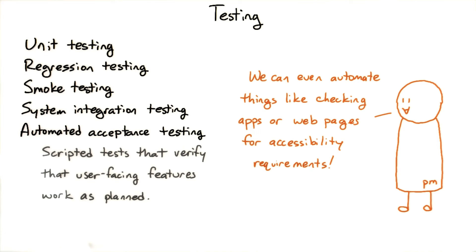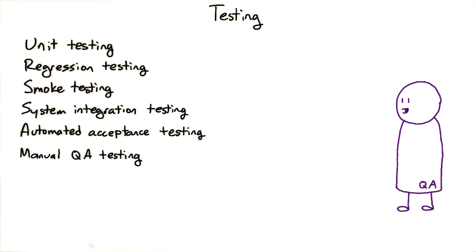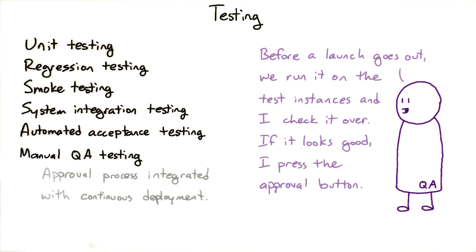Whole workflows — clicking buttons, filling out data fields, whatever a user might do in your app. And then depending on your service, you might have a manual QA step as well before a launch goes to production. If that's the last step before launch, the QA tester's approval can actually tell the continuous deployment system that it's okay to go ahead with the rollout.